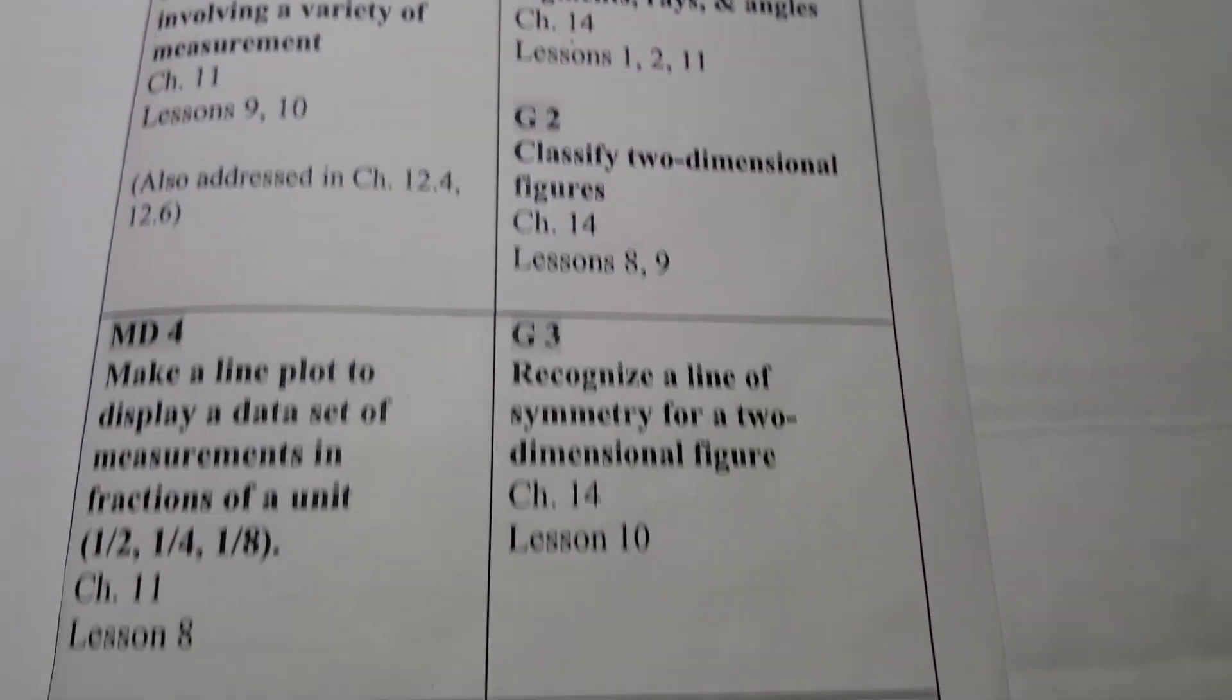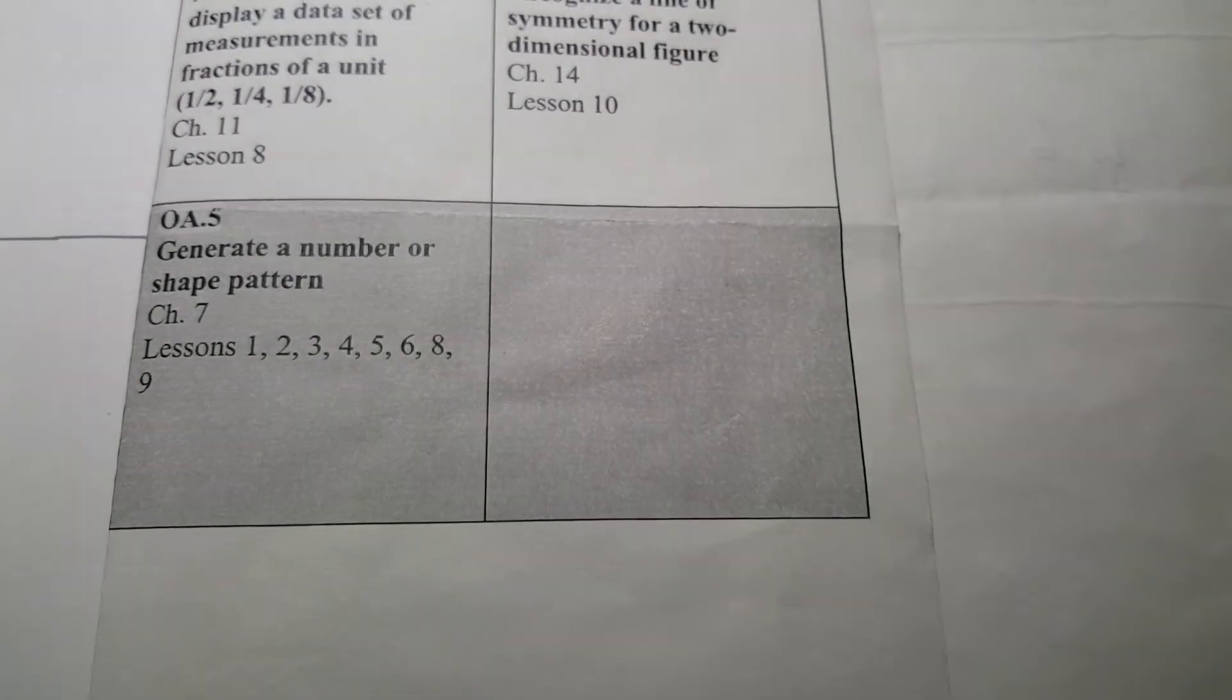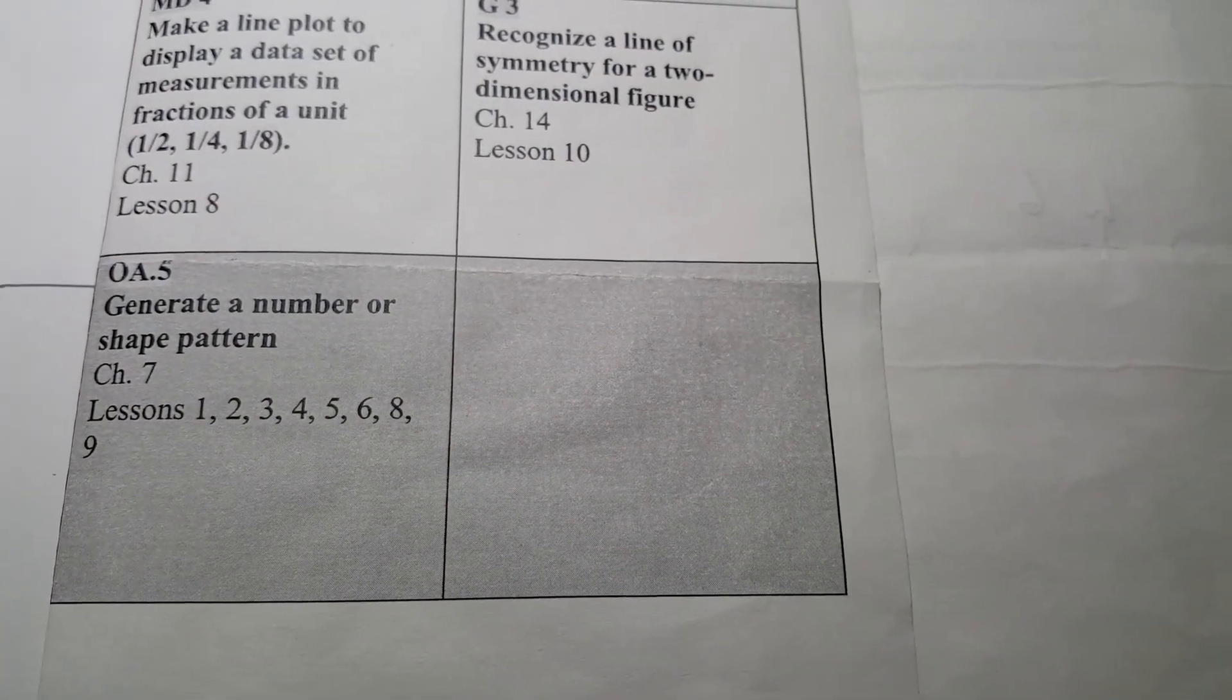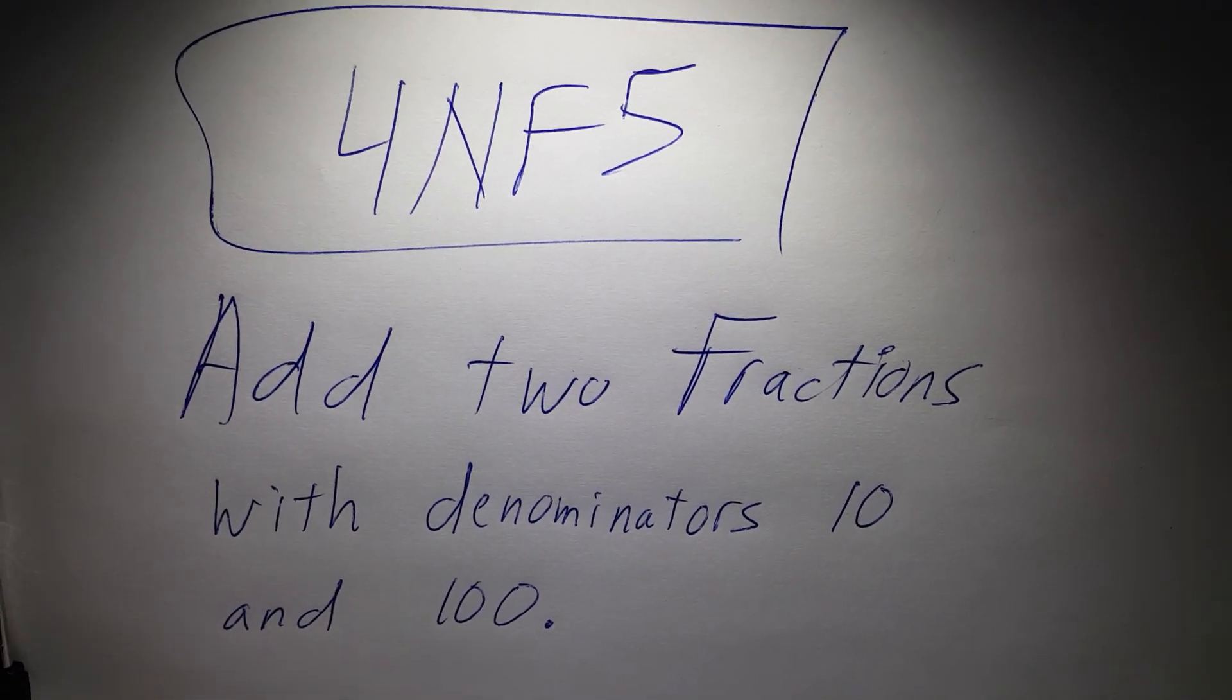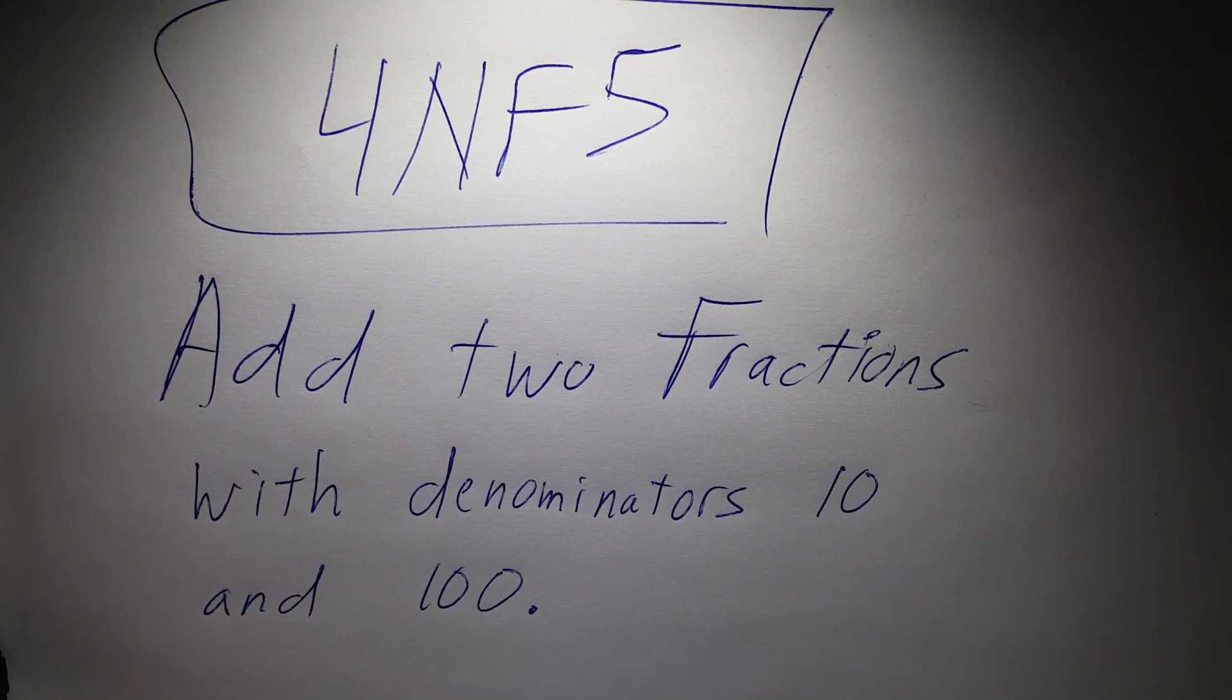4MD1. So we will finish fractions and decimals and then move on to measurement and data. Next one, MD2, MD4, and then of course do some other ones, OA5. And then you will have your last assessment unit 5, but we'll worry about that later. Let's just focus on 4NF5: add two fractions with denominators 10 and 100.